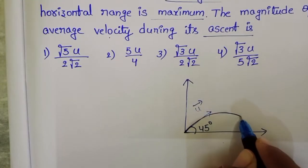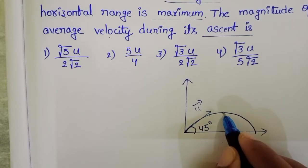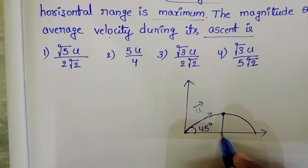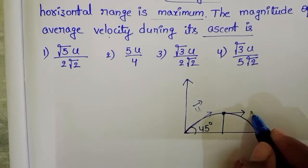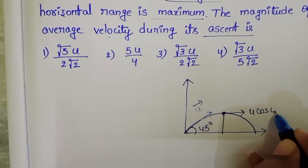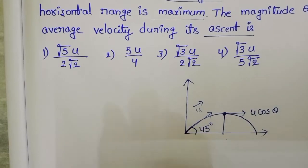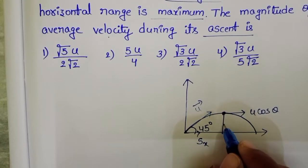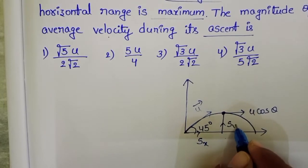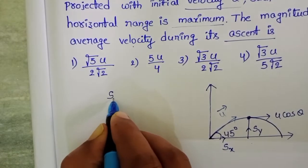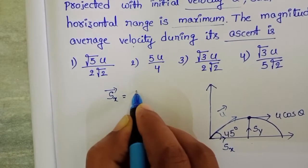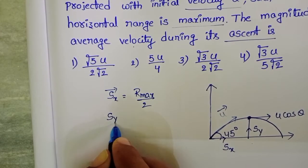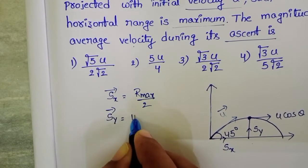The path followed by the object is a parabola. Within the time of ascent, the particle reaches maximum height. At maximum height, the particle possesses only the horizontal component of velocity. During ascent, the particle covers both horizontal displacement and vertical displacement. The horizontal displacement equals half of the maximum range, and the vertical displacement equals the maximum height.